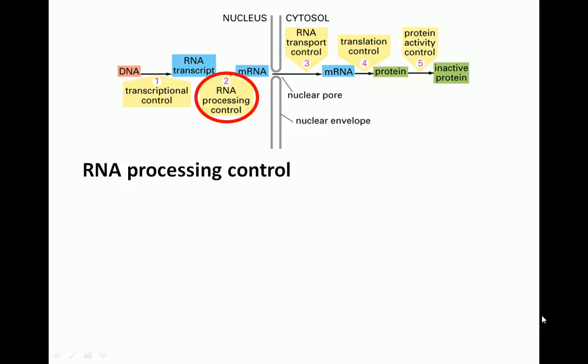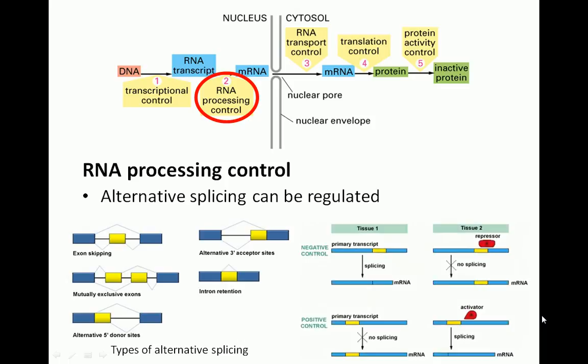RNA processing control involves modifications in the processing of transcribed mRNA. Alternative splicing, which is the production of protein variants using different combinations of exons, is one form of RNA processing and can be regulated. For example, the increased activity of certain activator regulatory proteins might favor the production of one variant over others.